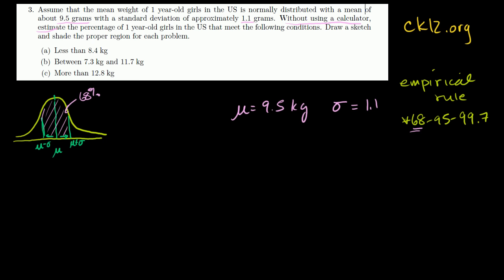If we're talking about two standard deviations around the mean — going down another standard deviation and another standard deviation above — the probability of finding something within that range is 95%. The 68% is a subset of that 95%. And if we go three standard deviations below and above the mean, the empirical rule tells us there is a 99.7% chance of finding a result within three standard deviations of the mean.